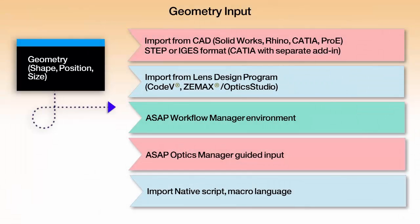Ways that we get geometry into a system include import from CAD, which is a very important input method. We typically use IGES or STEP input. CATIA is also possible with a separate add-in, but IGES and STEP in general work well and are very flexible — they're imperfect but very good, particularly for getting in items that have macroscopic surface properties. Many CAD formats do not accurately represent optical surfaces, so we may use a hybrid approach where we input from CAD but then import from lens design or create in ASAP native just the imaging optical surfaces.